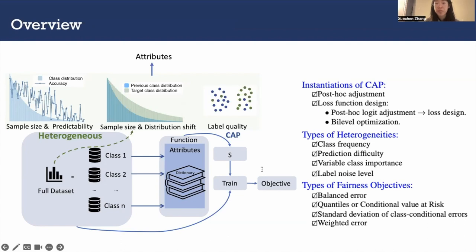In detail, CAP is a meta-approach that generates a class-specific strategy based on attributes of that class. It leads to big improvement over a naive approach of assigning separate hyperparameters for each class.